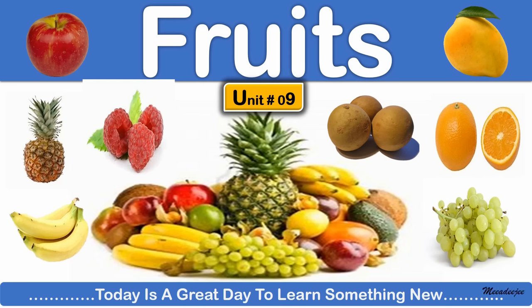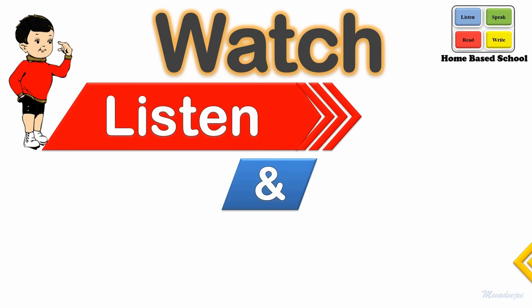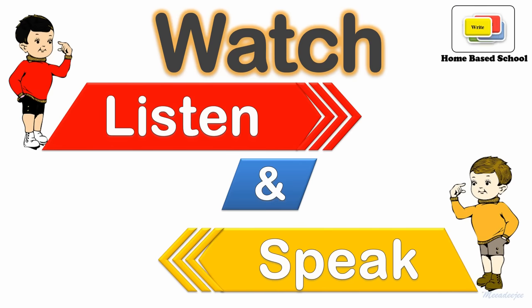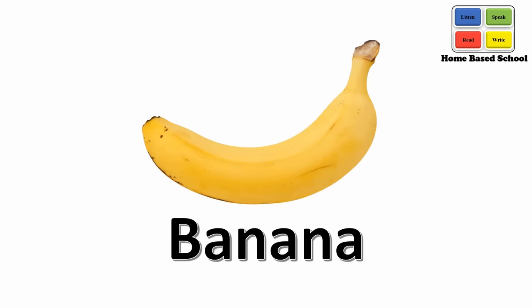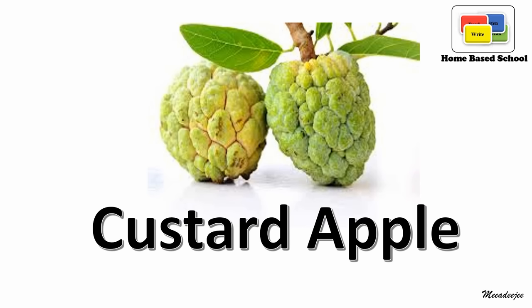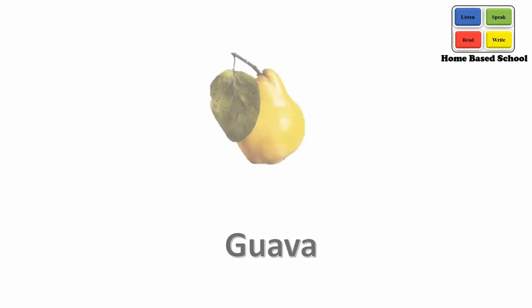Unit 9: Fruits Name. Watch, listen and speak. Apple, this is an apple. Banana, this is a banana. Custard apple, this is a custard apple. Grapes, this is a bunch of grapes.